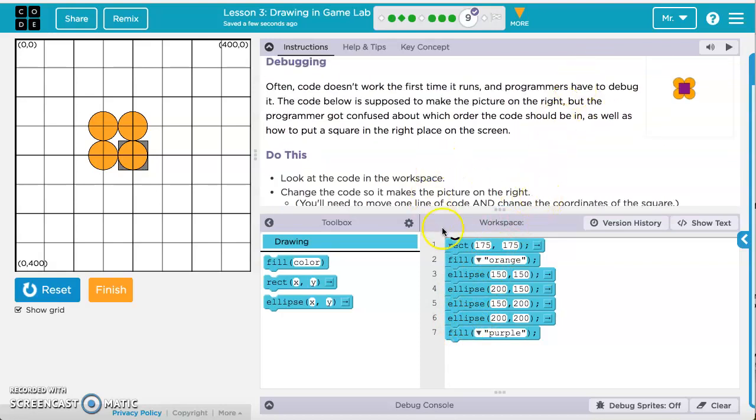But as we said in the last exercise, it goes in order from line one and it draws things in order. So we actually want the orange ellipses to be drawn first and then we want the purple square, or rectangle, to be drawn last. So if we take this rectangle and we put it down below the purple, what's going to happen is it's going to draw the orange ellipses and then it's going to change the color purple and draw our rectangle.